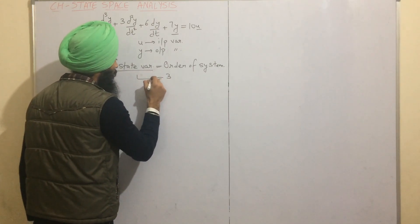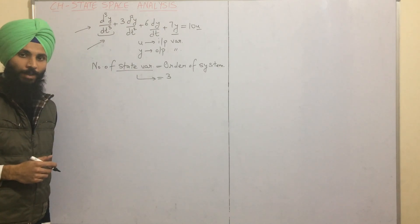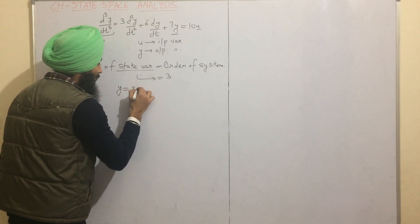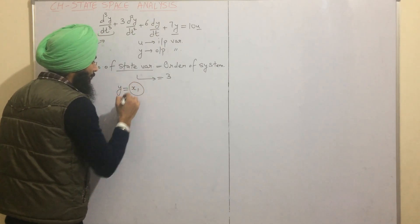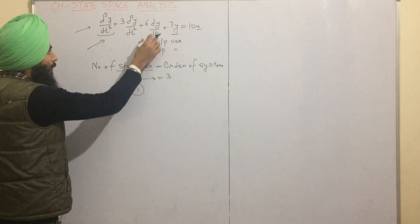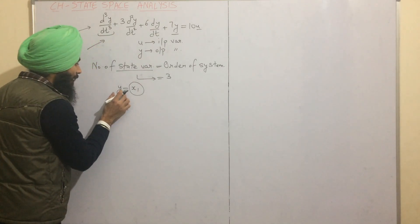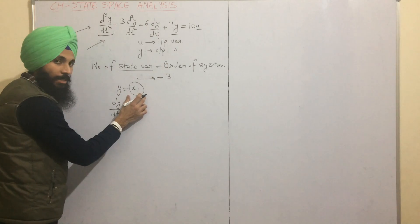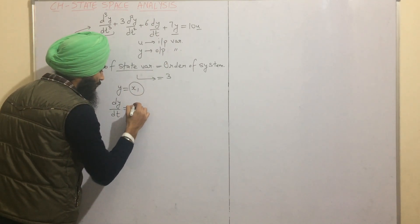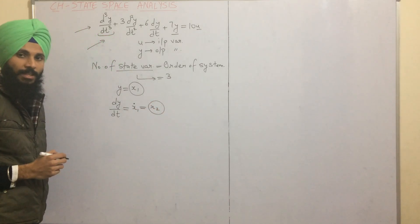Since the number of state variables is also equal to 3, we now find their values. If we equate y = x1, where x1 is the first state variable, then when y is differentiated with respect to time we get dy/dt. If y is differentiated, the first state variable is also differentiated, so we write x1_dot and equate it equal to x2, the second state variable.